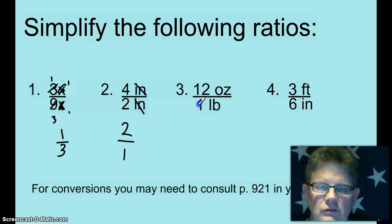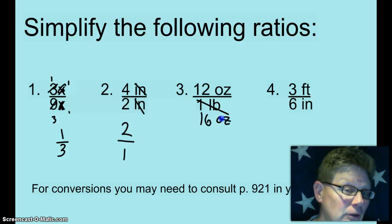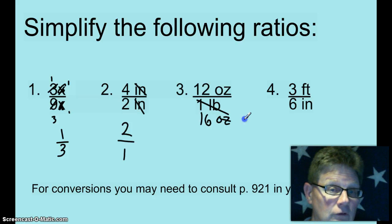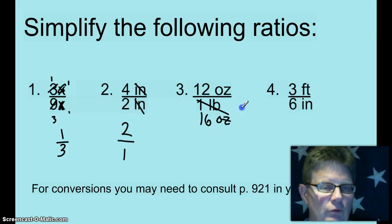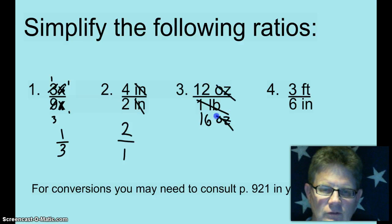12 ounces to 1 pound. Well, you could change them both to pounds or you could change them both to ounces. I think it's easier to change this to ounces. 1 pound is 16 ounces. That's why professional boxers wear 16-ounce gloves so they can pound their opponents. Now that I changed the pounds to ounces, I can cancel out the ounces and then reduce 12/16ths to 3/4.